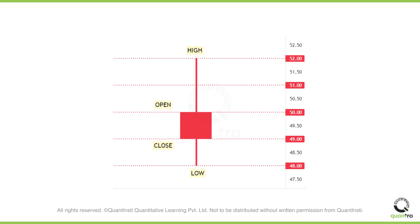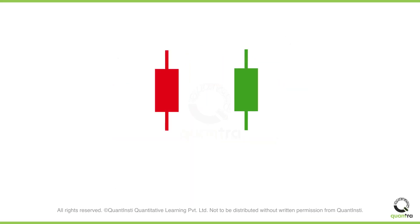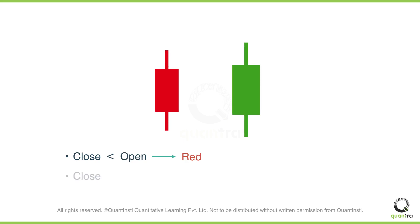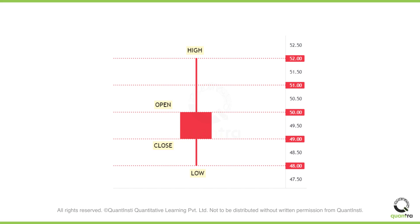Lastly, the color of the candlestick, either red or green, signifies some useful information. A red-colored candle indicates that the close price of the candle was less than the opening price. On the other hand, a green candle signifies that the close price was greater than the open price. In the above example, because the price opened at $50 and closed at $49, which is lower than the open price, the color of the candlestick is set to red, indicating the price closed lower.